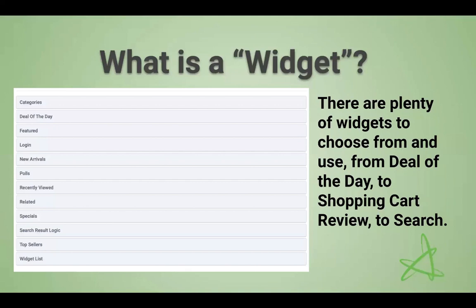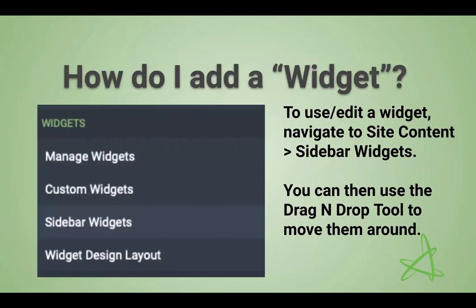There are many different widgets that could exist, and you can see some of them in this list. These are just the basic standard ones that come built in — whether it's displaying the list of categories, a deal of the day, featured items, a login widget, or polls. You can plug them in anywhere inside your header or footer however you see fit. There are a couple of ways to do that: you can manually take a snippet of code from the widget list and plug it into your header or footer, or you can plug it in using the editor, which I'll show you in just a second.